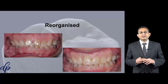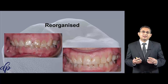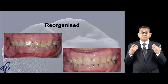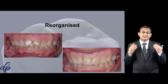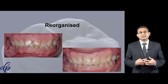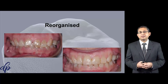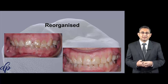With mutually protected occlusion — whereby the posterior teeth protect the front teeth and the front teeth protect the posterior teeth — this principle can be implemented very predictably when doing the reorganized approach.